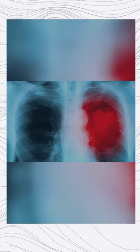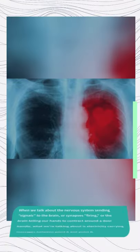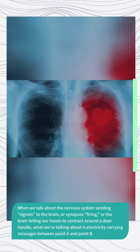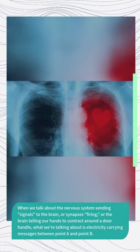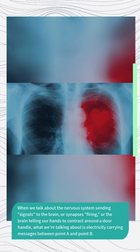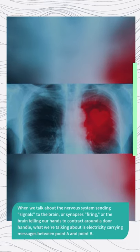When we talk about the nervous system sending signals to the brain, or synapses firing, or the brain telling our hands to contract around a door handle, what we're talking about is electricity carrying messages between point A and point B.